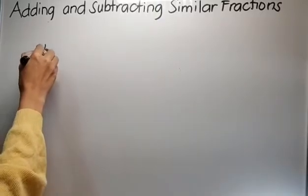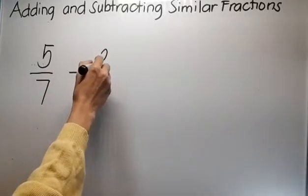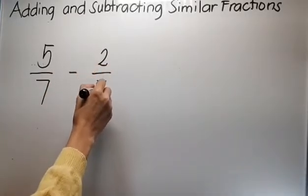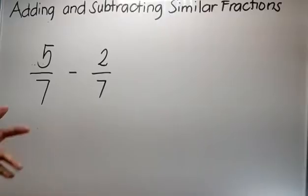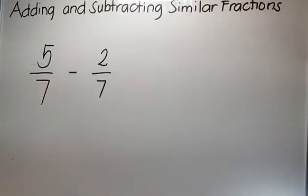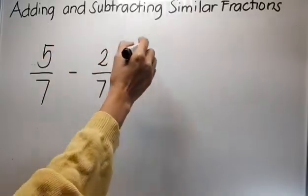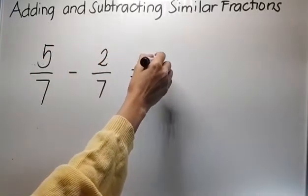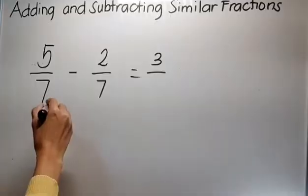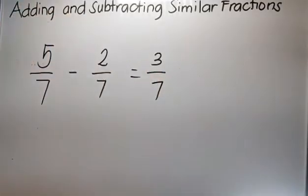Halimbawa, 5/7 minus 2/7. Again, ang dalawang fraction na ito ay similar fractions dahil magkatulad ang kanilang denominator. So, dito ka lang ulit mag-concentrate sa taas: 5 minus 2 ay 3, and then you copy the denominator. Ganon lang po siya kadali.